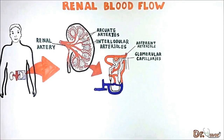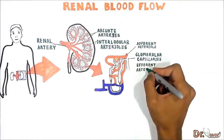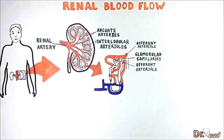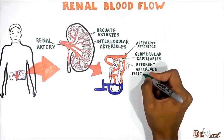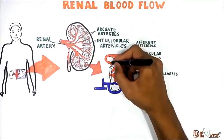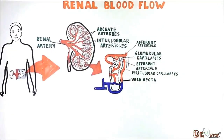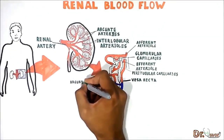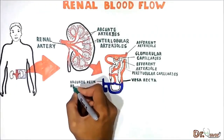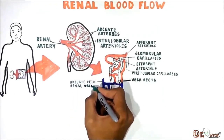The glomeruli are the many tiny capsules where the plasma fraction of the blood is filtered. Blood exits the glomerular capillaries by the efferent arterioles. The efferent arterioles then adjourn to the peritubular capillaries, which form the vasa recta in the medullary region. Then the blood flows to the arcuate vein, which in turn flows to the renal vein.